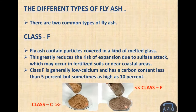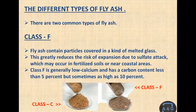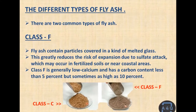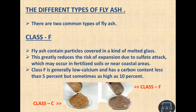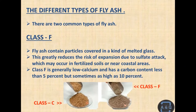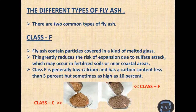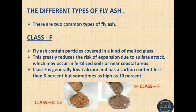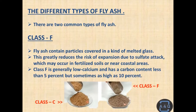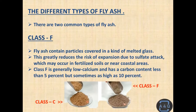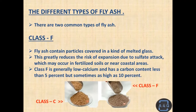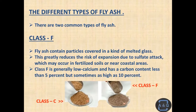There are two common types of fly ash. Class F fly ash contains particles covered in a kind of melted glass. This greatly reduces the risk of expansion due to sulfate attack, which may occur in fertilized soils or near coastal areas.